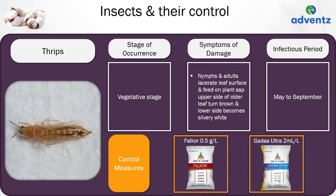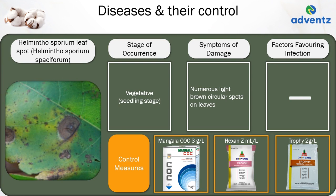The cotton crop suffers from a number of diseases. The first disease is Helminthosporium leaf spot. The causal organism is Helminthosporium. It occurs in the vegetative or seedling stage. The symptoms of damage are numerous light brown circular spots seen on the leaves. Control: apply Mangala COC at 3 grams per litre, or Jai Kisan Hexan at 5 ml per litre, or Jai Kisan Trophy at 2 grams per litre.